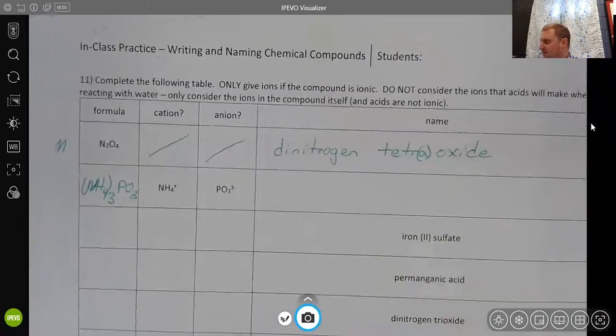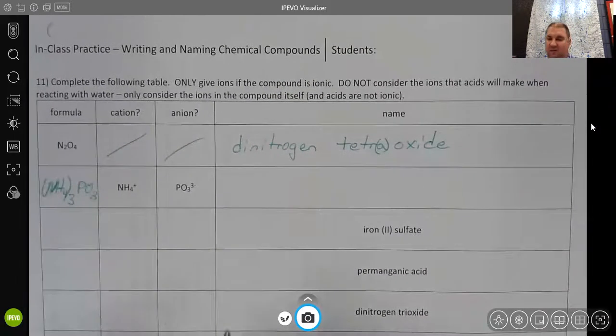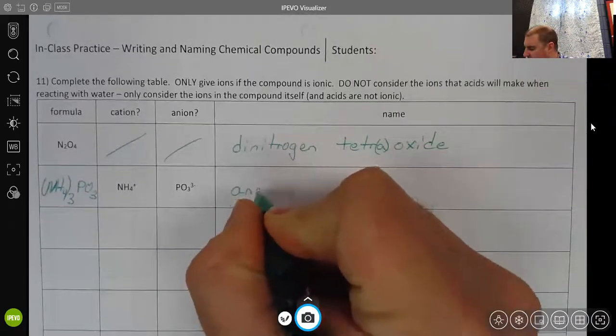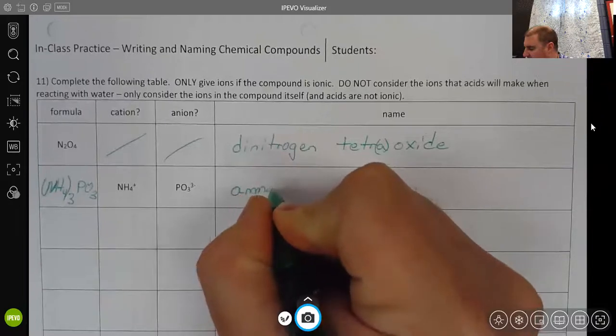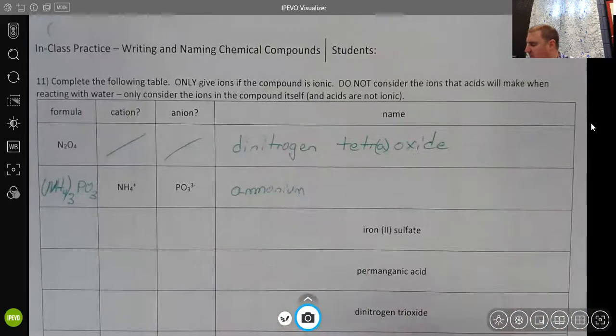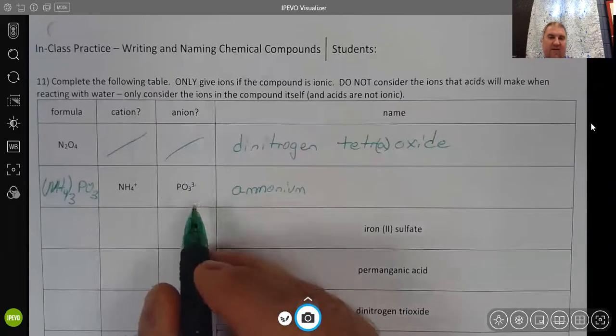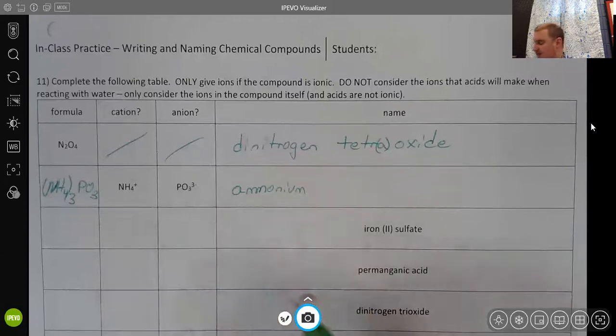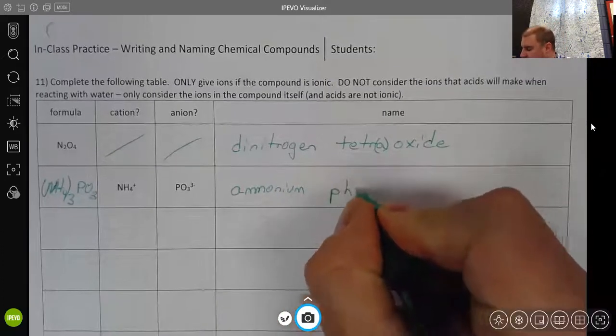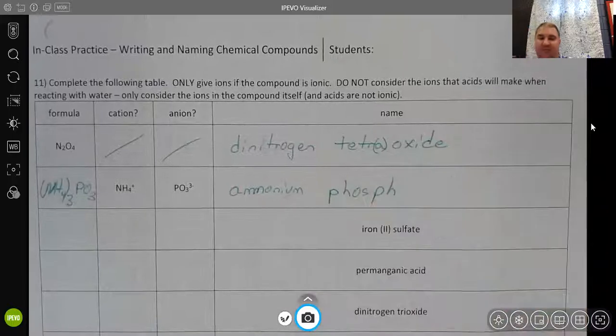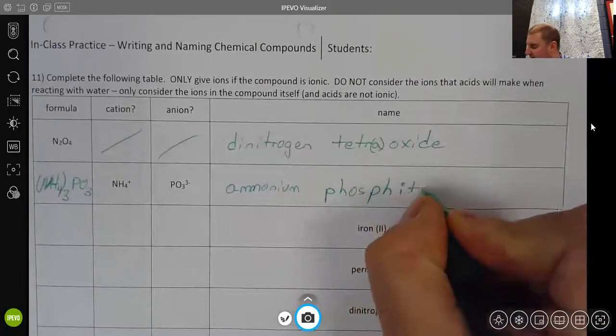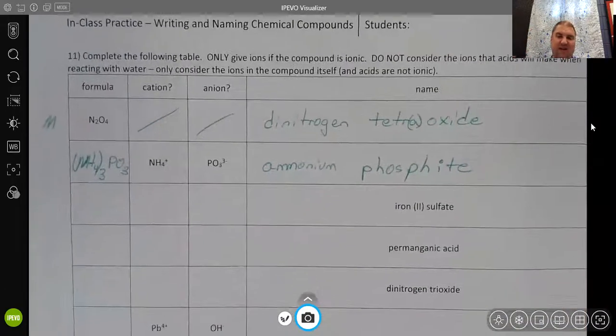Now the names of those ions, that's all we have to do to name the compound. NH4 plus, hopefully you remember, is ammonium. And then the PO3 looks an awful lot like phosphate, which would be PO4, three minus. Notice this has one less oxygen. Whenever you have less oxygen, instead of being an ATE ending, it will always be an ITE ending. So this would be ammonium phosphite.